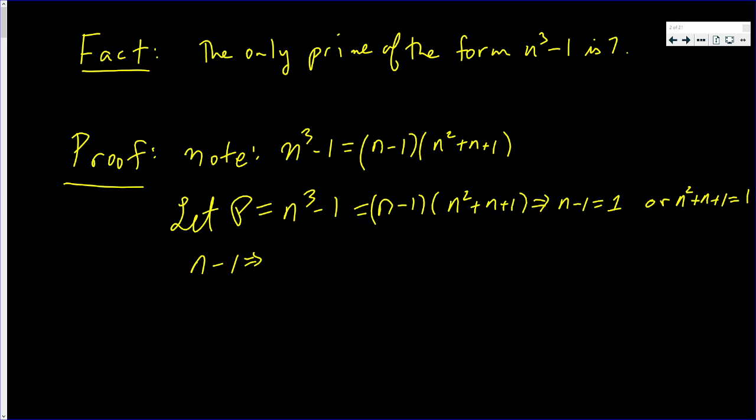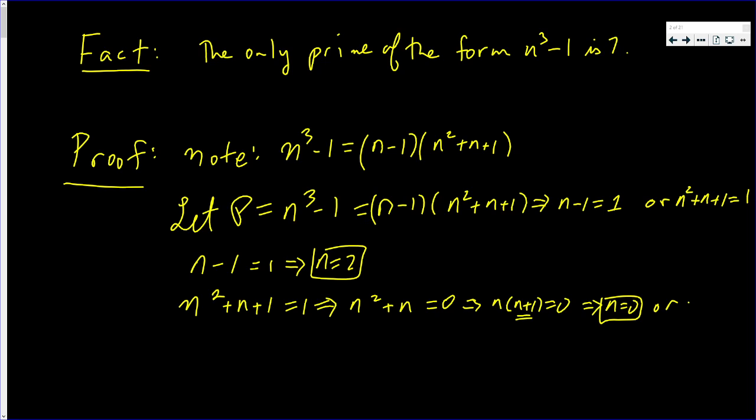n minus 1 equals 1. That's a simple one. That implies n is 2. n squared plus n plus 1 equals 1. That implies, taking away n from both sides, that n squared plus n is 0. But that implies n times n plus 1 is 0. That implies n is 0, or this is 0, so n is negative 1.